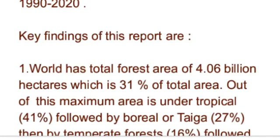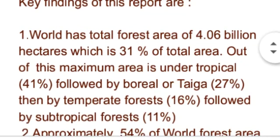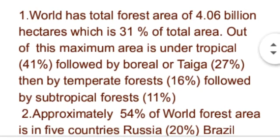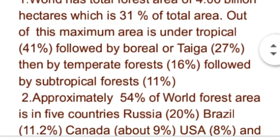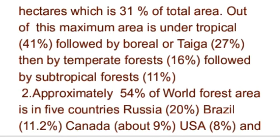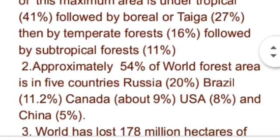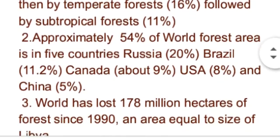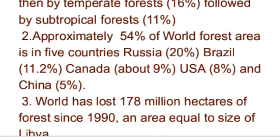First, world کا جو total forest area ہے that is 4.6 billion hectares، اور یہ world کے total area کا 31% ہے۔ اس میں maximum area tropical forests کے اندر آتا ہے جو total forest area کا 41% ہے۔ Second position پر boreal اور taiga forests ہیں جو 27% ہیں، third پر temperate forests ہیں جو 16% ہیں، اور fourth پر sub-tropical forests ہیں جو 11% ہیں۔